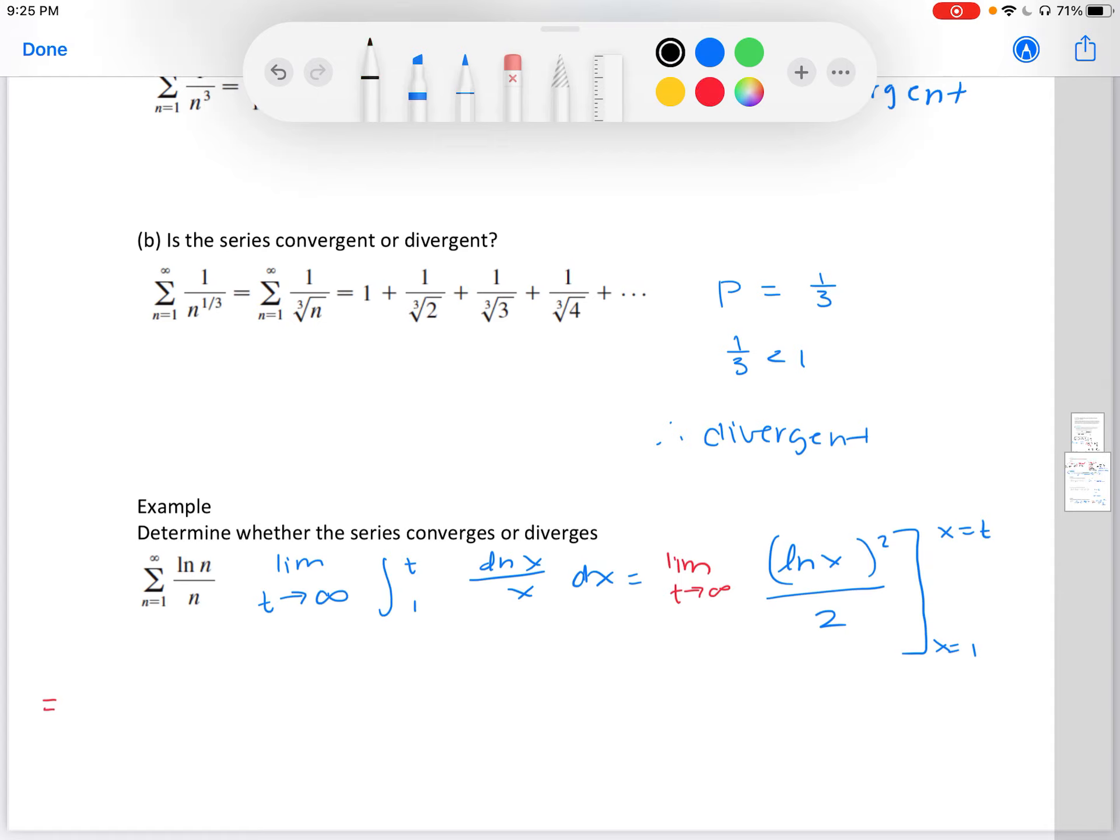Our answer is the limit as t is approaching infinity of ln(t) squared over 2 minus, now we plug in a 1, the ln(1) squared over 2. For ln of 1, our answer is 0, so all of that is just 0. So now we're left to just enter this part here.